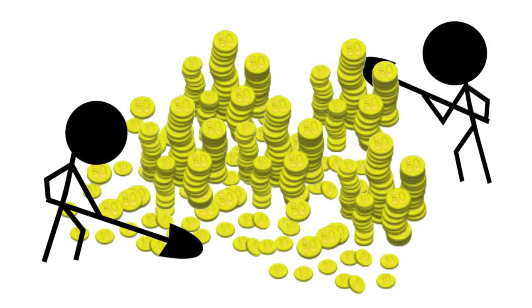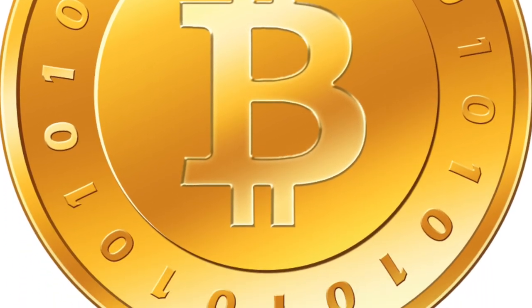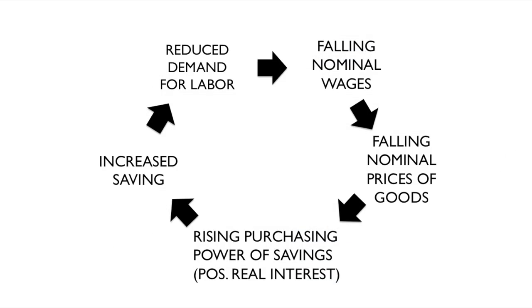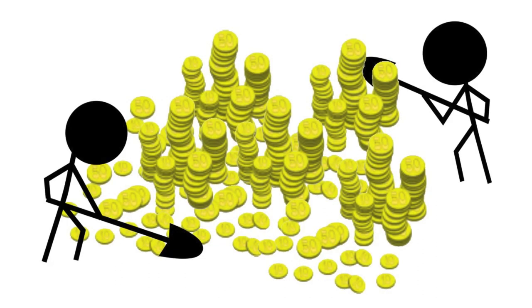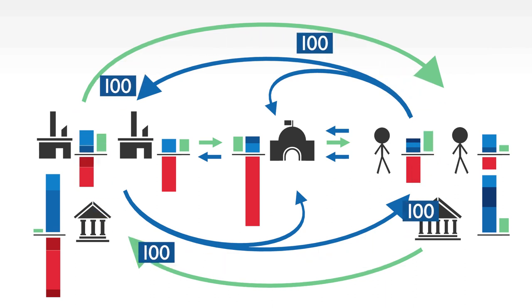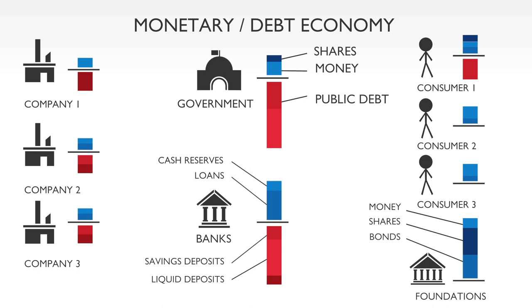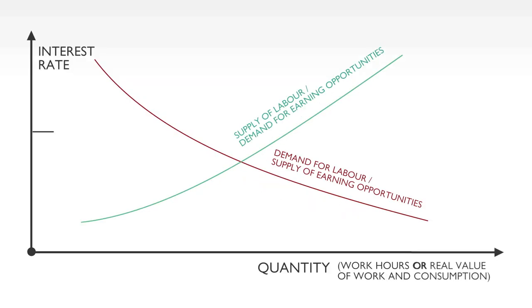Commodity currencies of limited supply, like gold or bitcoin, are merely constant speculative bubbles. The real interest rate mechanism in such currencies actually works in reverse, with a positive self-reinforcing feedback loop. Excess saving causes prices to fall, raising purchasing power, which encourages further saving and hoarding. For an economy to work stably with such a currency, completely ridiculous assumptions would need to apply, such as a constant circulation velocity — which is what the quantity theory of money assumes. Instead, in a credit accounting system like the one we have, the credit market and hence the labour market can be kept in balance with the interest rate.